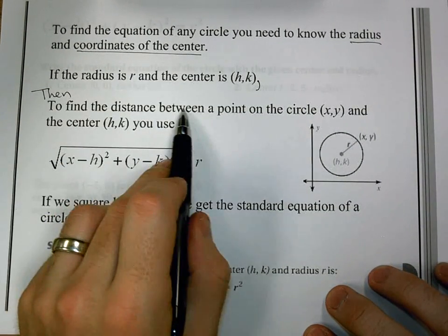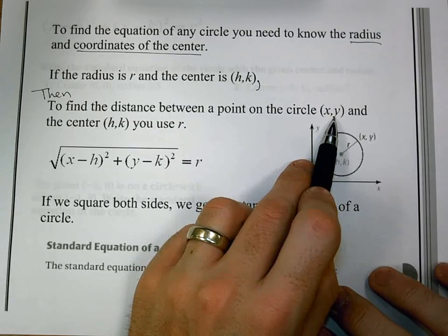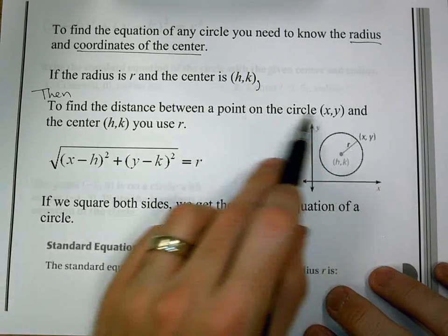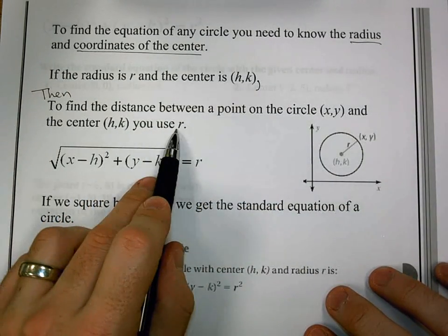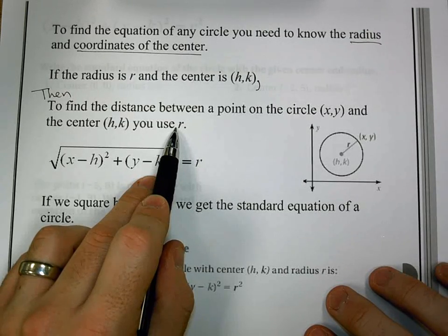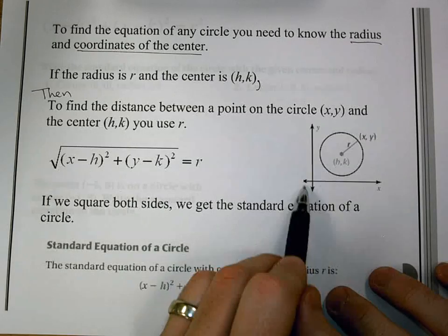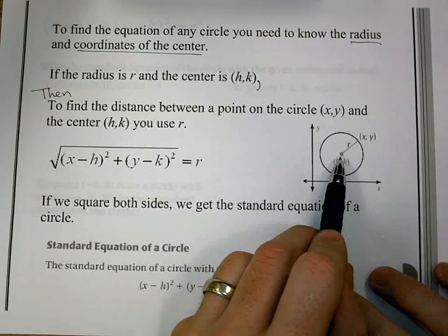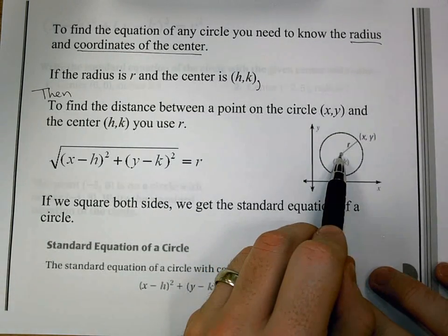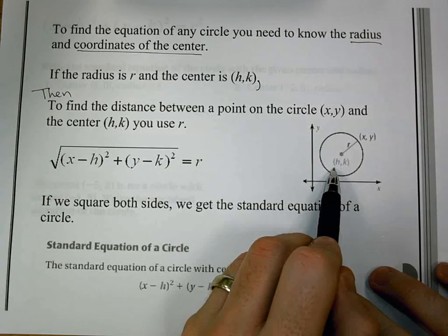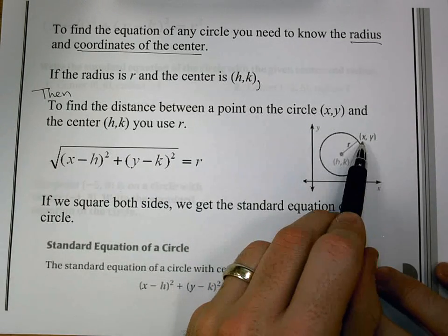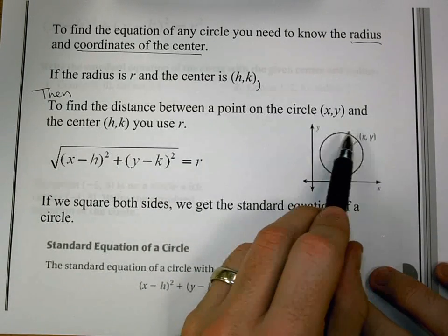Then, to find the distance between a point on the circle (x,y), still that (x,y) somewhere on the circle, and our center (h,k), we would use r. Let's take a second here and look what we have. So I've now shifted it from over here to up here. My center is not at the origin anymore. It's now (h,k). I have my radius and I have (x,y), still some point on the circle.